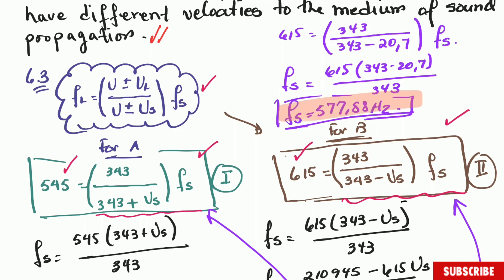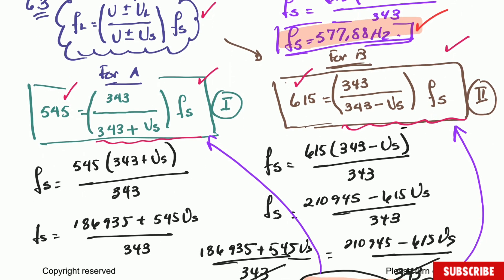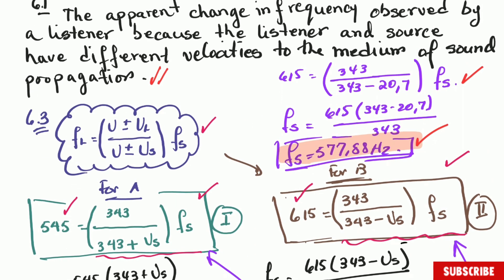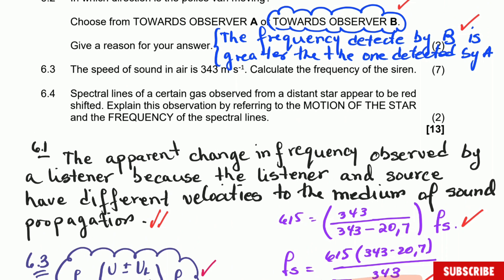That is the final answer for question 6.3. There are two additional marks — one for substituting the value of 20.7 and one for the final answer of 577.88 Hz. It's a good question and most of the marks are accessible. You can very easily get five marks out of seven, which is 70% of that specific question.